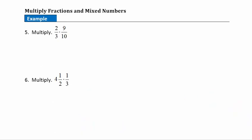Now let's take a look at some examples that will help you understand how to multiply fractions and mixed numbers. The nice thing about that factoring method is it can make multiplication easier, because what we do when we multiply is go straight across — multiply the numerators and denominators. But it's almost always easier if we factor things out and simplify them before we multiply.